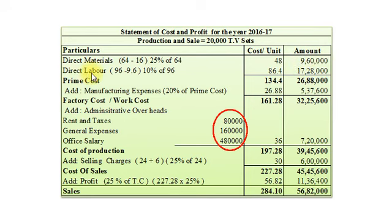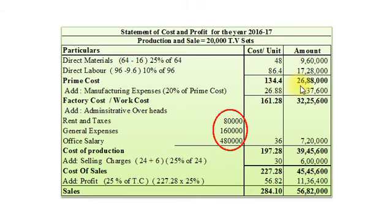Second element: Direct Labour. In 2015-16 it was Rs. 96 per unit. The estimate for 2016-17 is it will reduce by 10%, that is Rs. 9.6. So our wages cost per unit amounts to Rs. 86.4, and the total amount is Rs. 17,28,000. So our Prime Cost amounts to Rs. 134.4 per unit and Rs. 26,88,000 total.